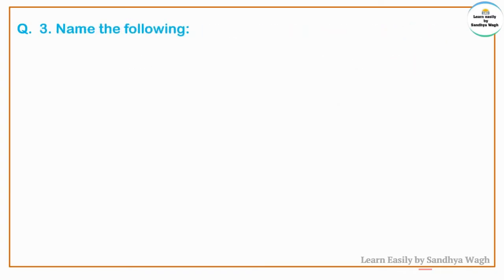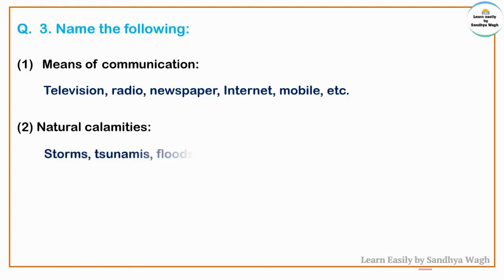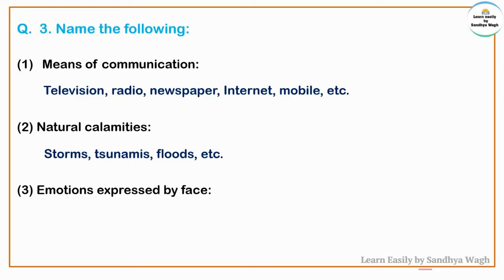Question 3: Name the following means of communication — television, radio, newspaper, internet, mobile, etc. Natural calamities are communicated through these means. Next: emotions expressed by face.